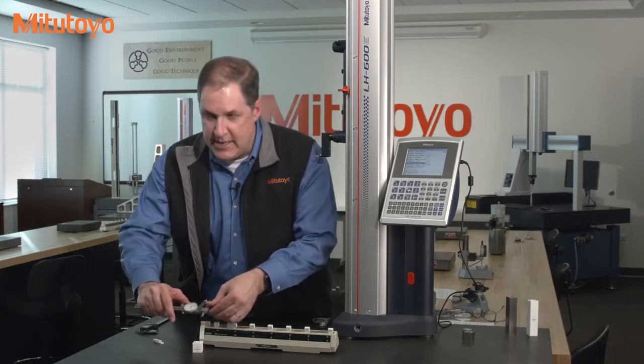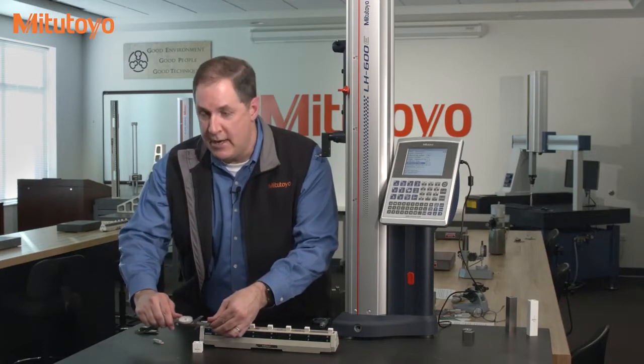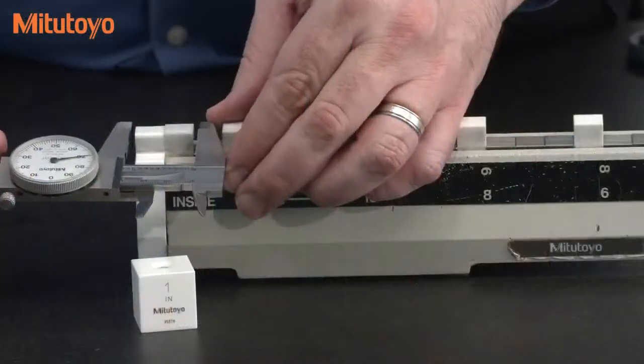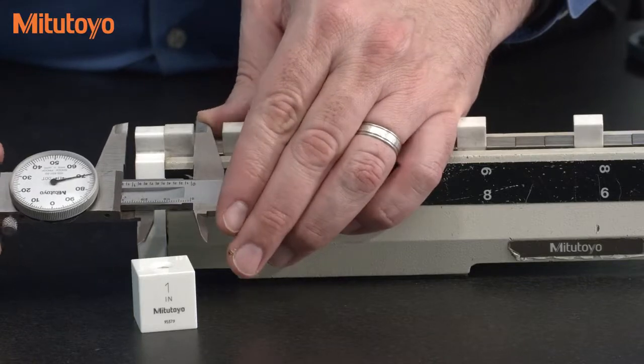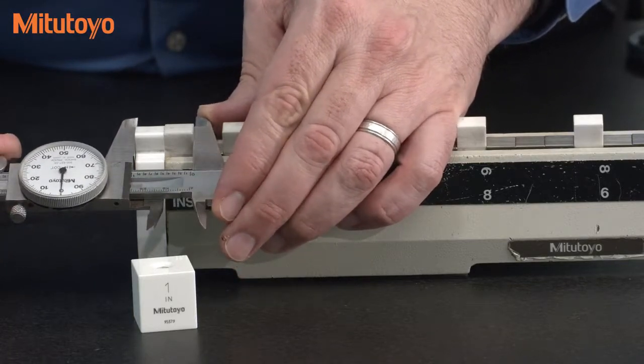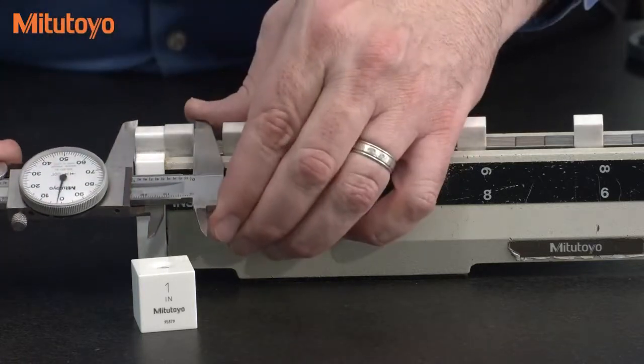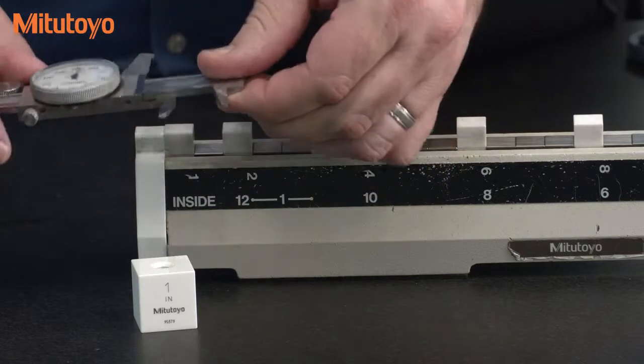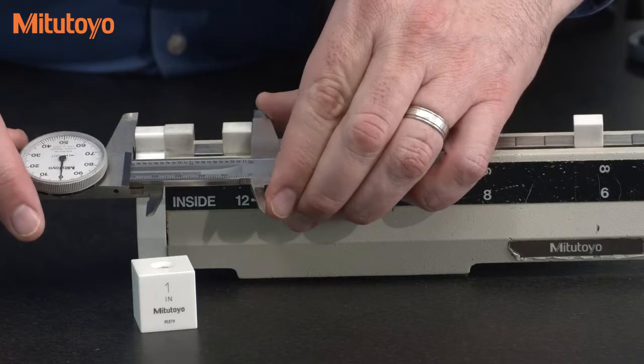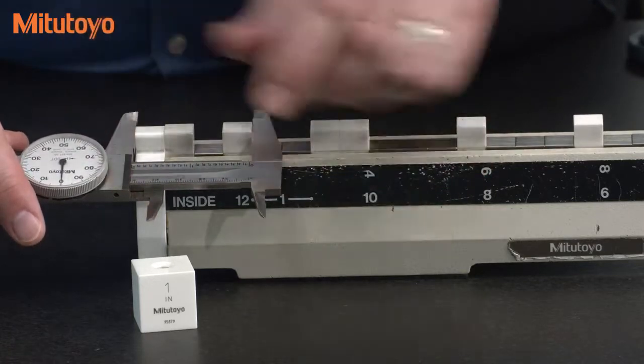So I'm going to repeat the same outside measurements as I did with the digital caliper, so at one inch—and notice that the dial is at the 12 o'clock position. I go to the two inch, once again the 12 o'clock position.